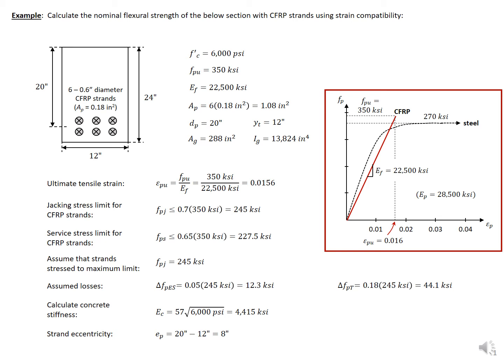In this example problem, we're going to calculate the nominal flexural strength of the beam section with CFRP strands. We have six CFRP strands. The area of our carbon fiber reinforced polymer strands is a little different than our area of conventional steel strands — this is given by the manufacturer. For these 6/10-inch diameter strands, we'll have an area of 0.18 square inches.